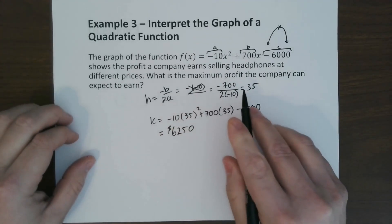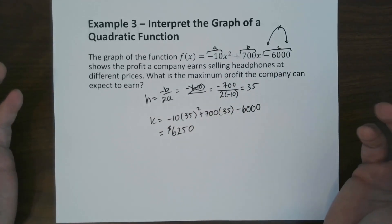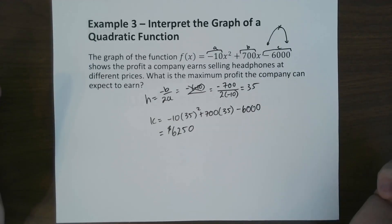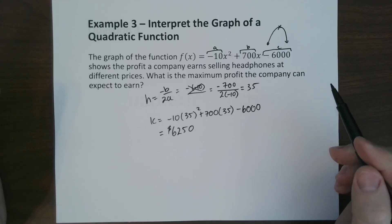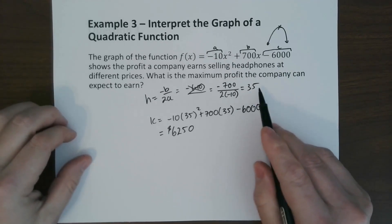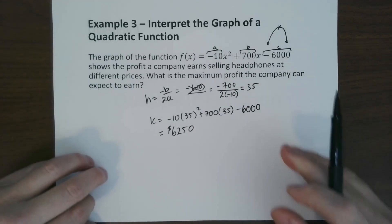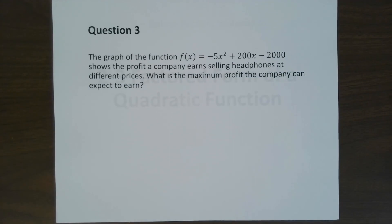So that is the maximum profit the company can make and expect to earn from selling headphones. Now to get that maximum profit, they need to do an average of about 35 cents. That's the most money they'll make because they got to balance it all out. So go ahead and try it with this one.